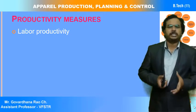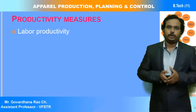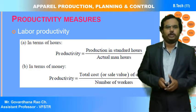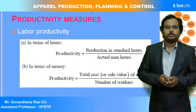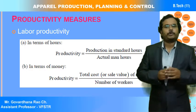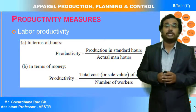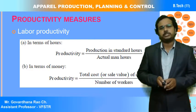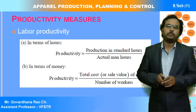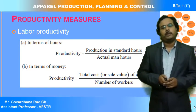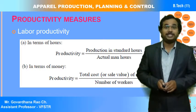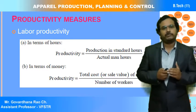Now we can see productivity measures — how we can measure productivity. The first is labor productivity, also called worker productivity. In terms of hours: productivity equals production in standard hours divided by actual man-hours. In terms of money: productivity equals total cost of output divided by number of workers involved to produce the particular output.